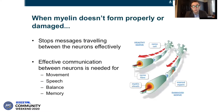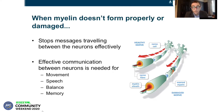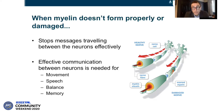So when myelin doesn't form properly, or when myelin is damaged, it stops messages traveling effectively between the neurons. Here we can see a message coming from one nerve cell to another, but where the myelin is damaged, the impulse just sort of dies away — it doesn't continue, so the message isn't sent effectively. So if you don't have effective communications between neurons, that's going to affect movement, speech, balance, thinking, and memory.